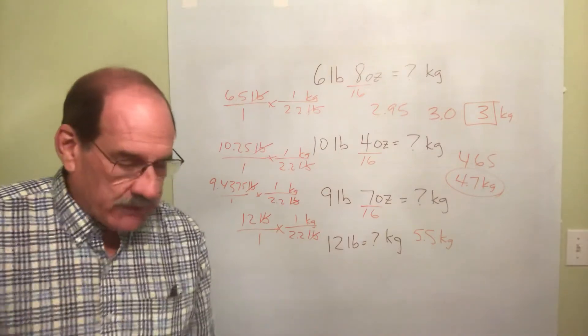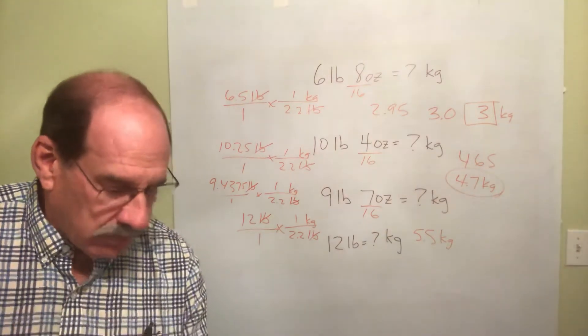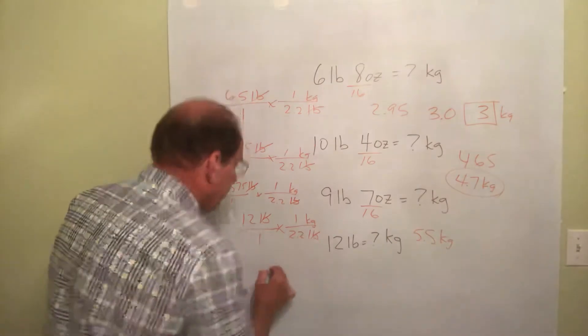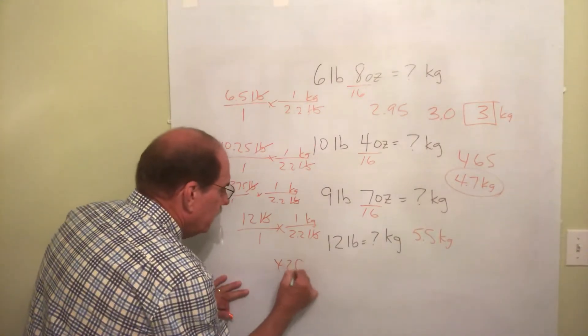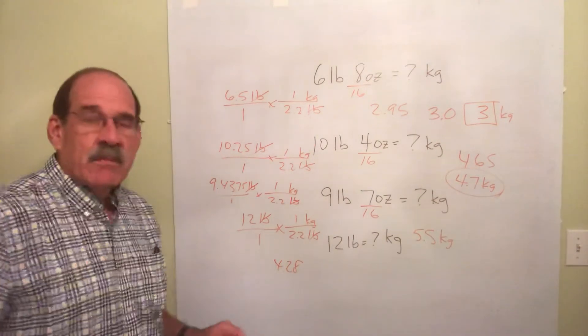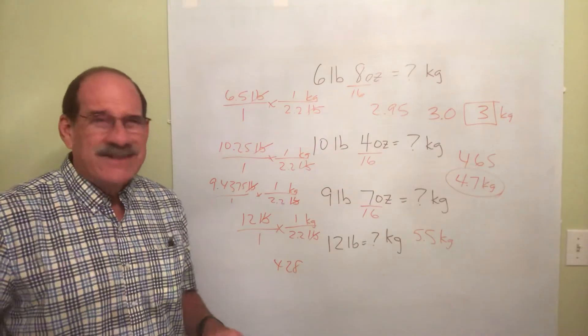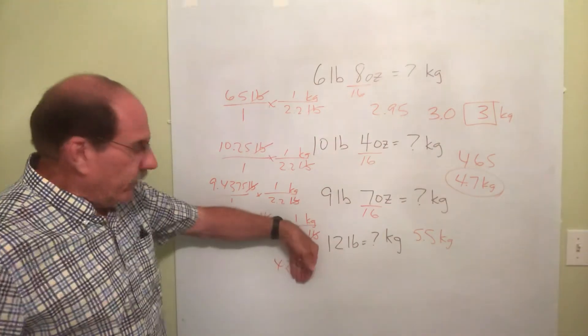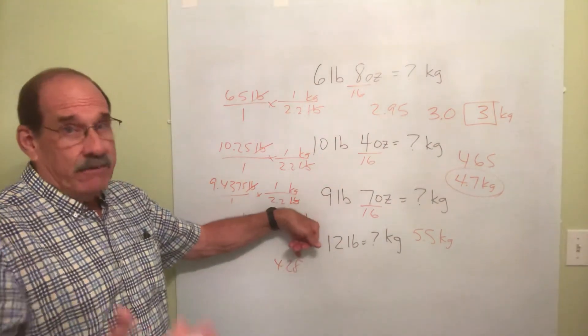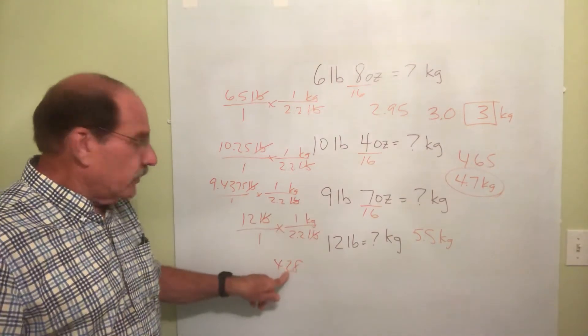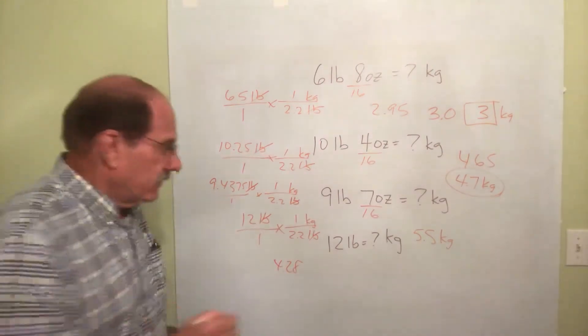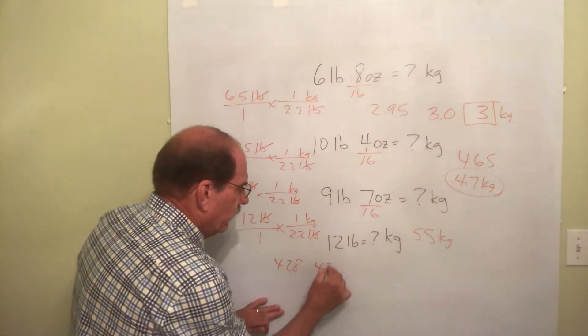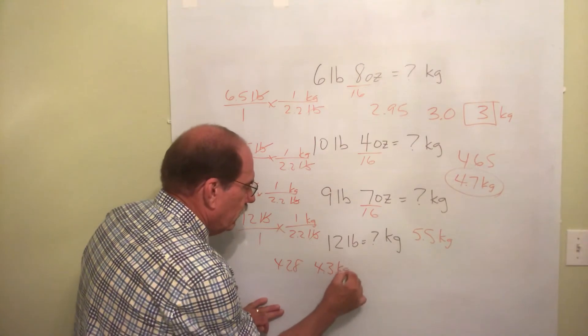And your final answer. Well, it says 4.28 blah, blah, blah, blah, blah. So, if it says down here 4.28 something or other, I'm going to round off to tenths. That's good enough. But because that next number is five or more, I make the two the next higher number. Final Jeopardy answer is 4.3 kilograms.